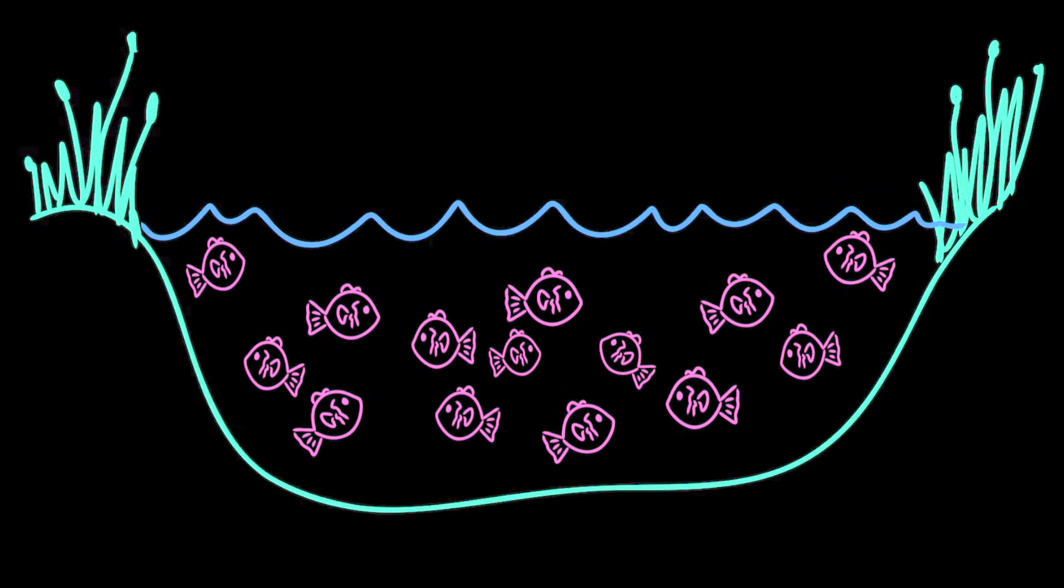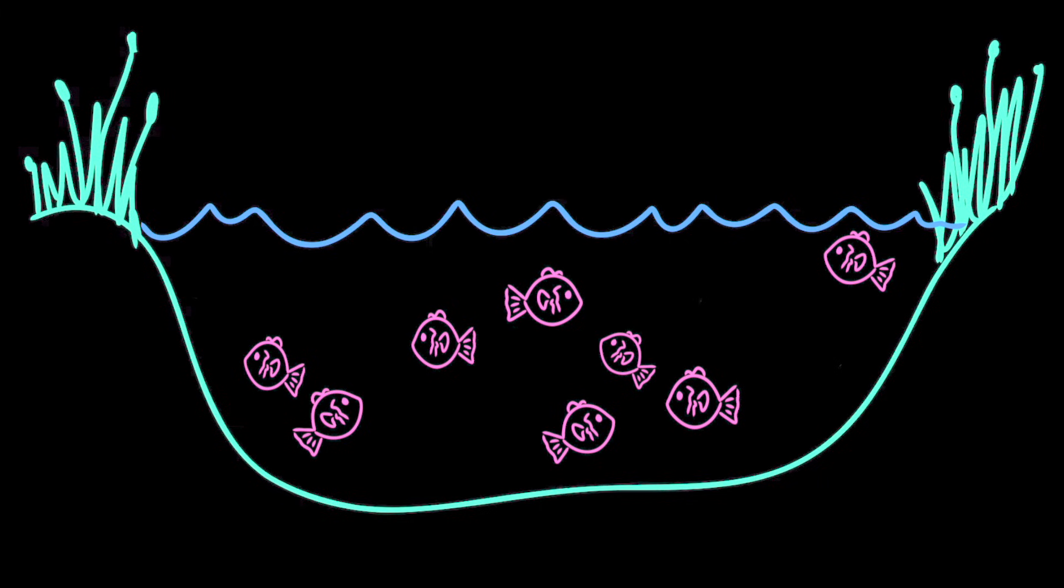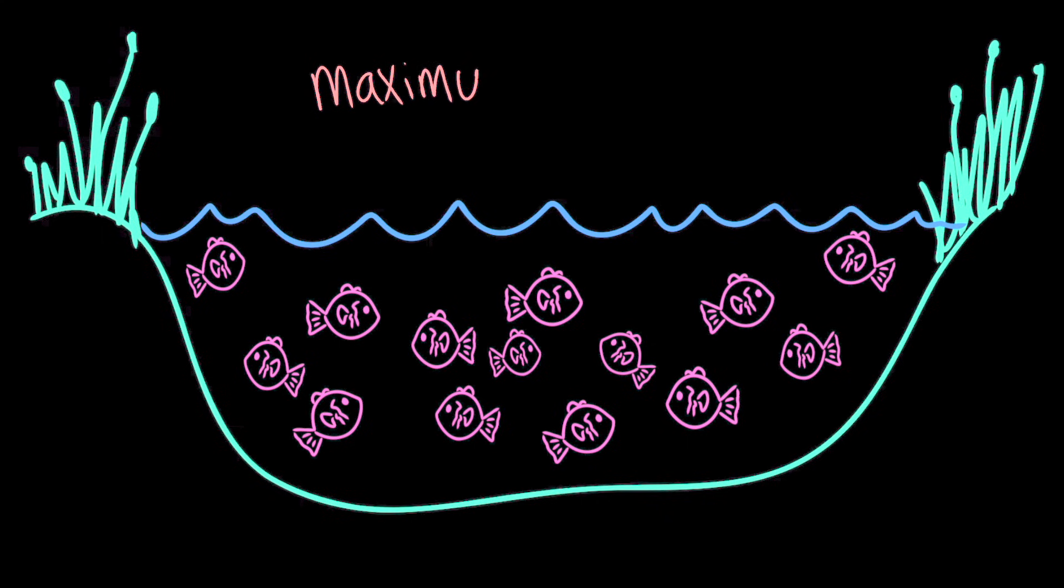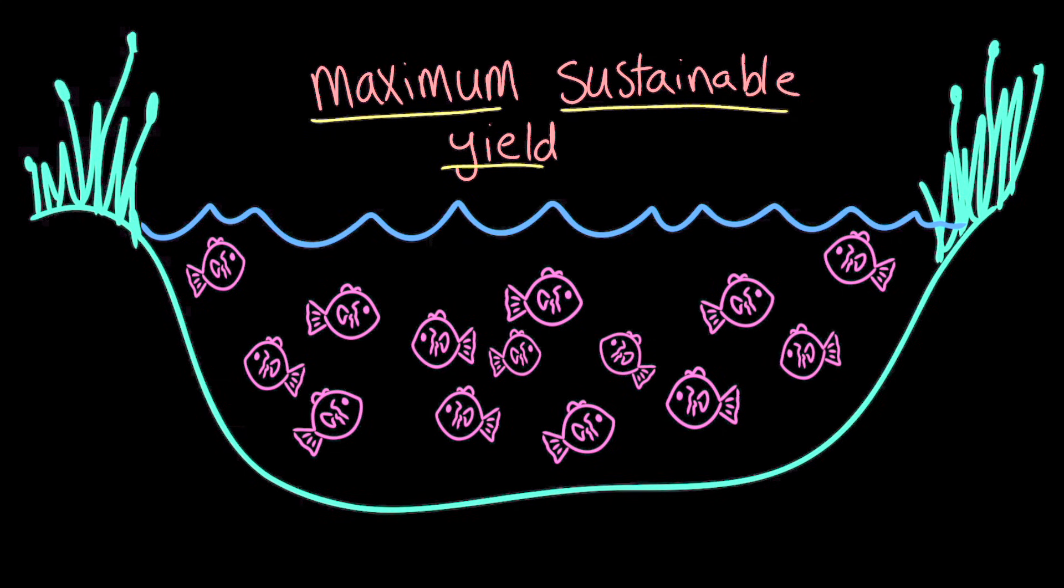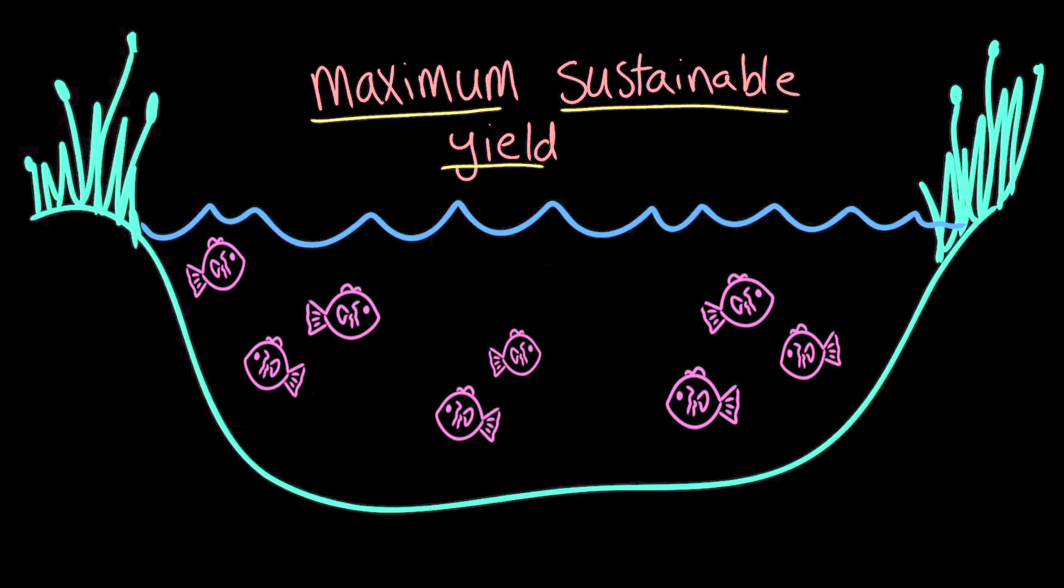There's some maximum number of fish that you could take so that there's enough fish left in the pond to reproduce and replenish the population. This number is called the maximum sustainable yield. Basically, you want to catch the most fish to have the maximum yield while still being sustainable. If you fish more than the maximum sustainable yields, then the fish will be captured more quickly than they can reproduce, and the population will slowly decline.